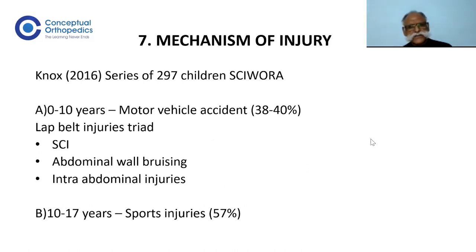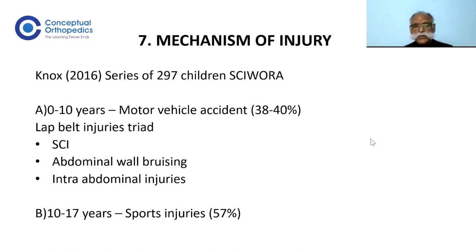Regarding the mechanism of injury, Knox stated that children below the age of 10 years predominantly have motor vehicle accidents. The lap belt injury triad is well known and should be carefully assessed for spinal cord injury with abdominal wall bruising and intra-abdominal injuries. In adolescents and children between 10 to 17 years of age, sports injuries are predominantly seen in SCIWORA.